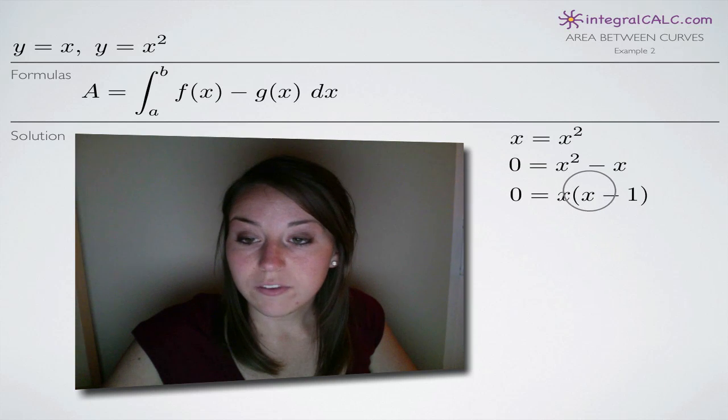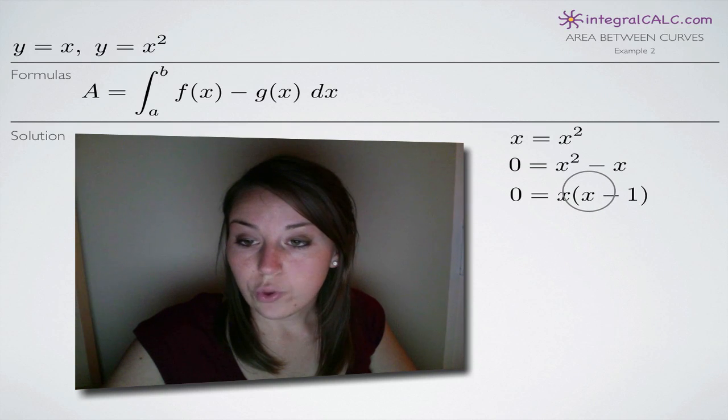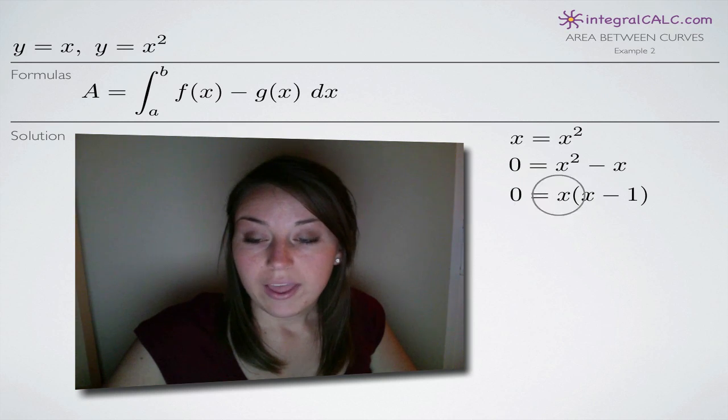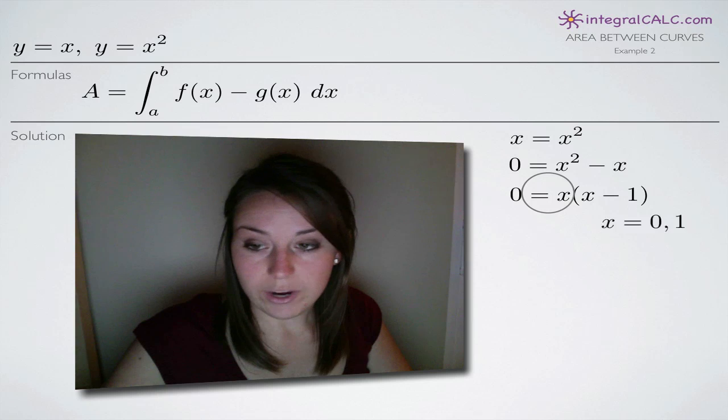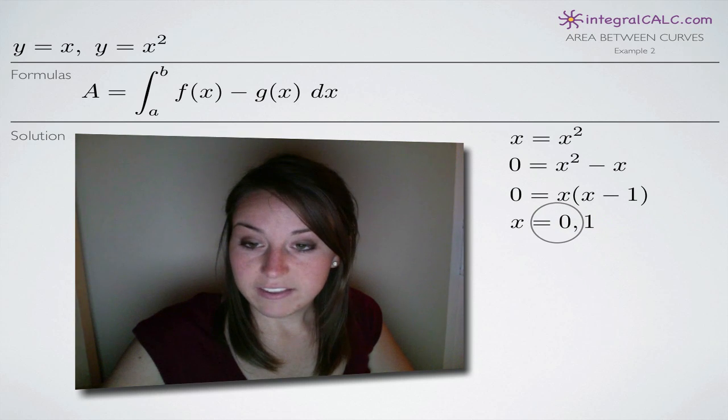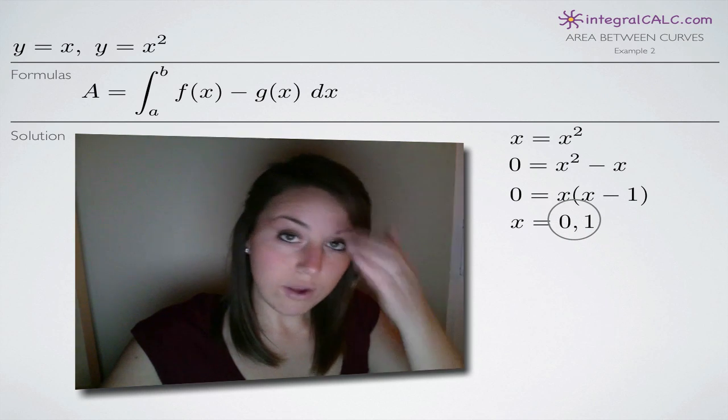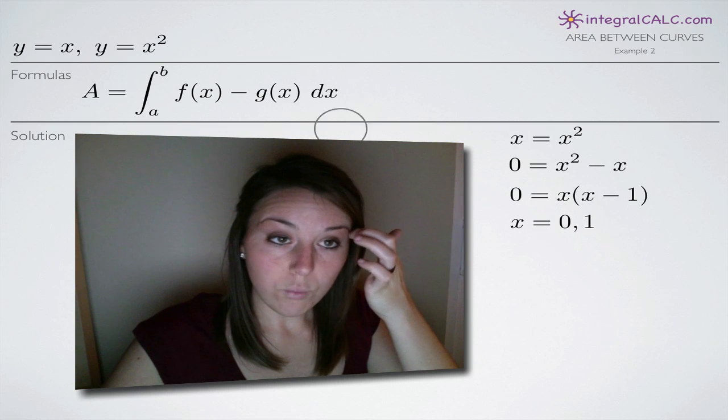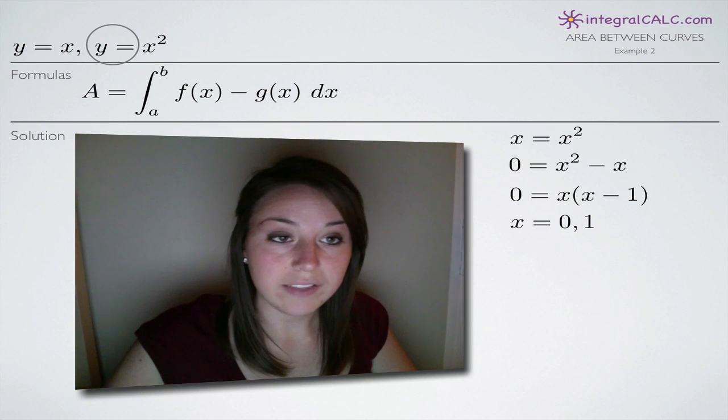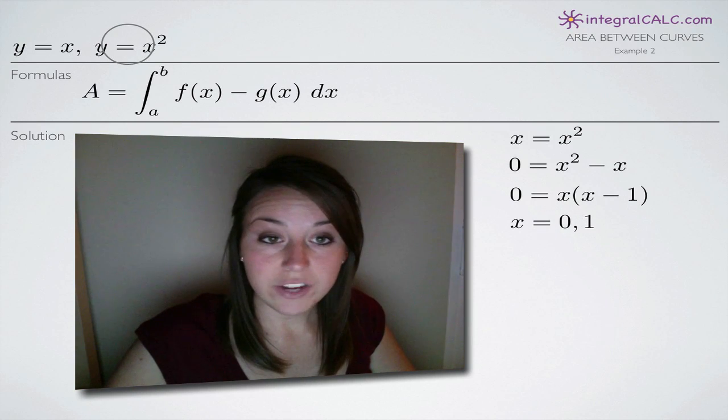Or according to this term, x could be equal to one because we'd get one minus one here which would give us zero. We'd have this term multiplied by zero and that would also satisfy the equation. Which means that x is equal to either zero or one. So zero and one are the points at which our two functions, y equals x and y equals x squared, intersect one another.